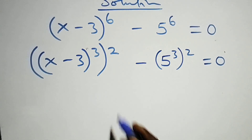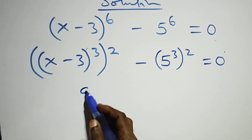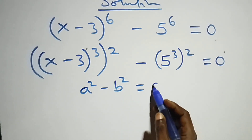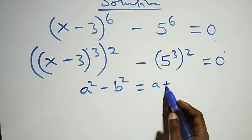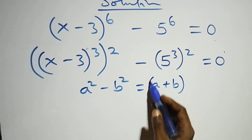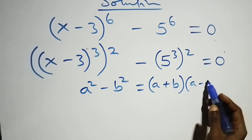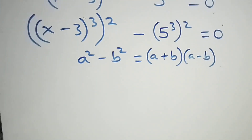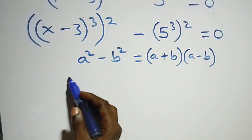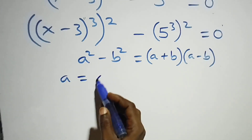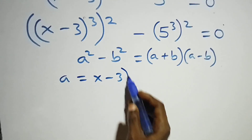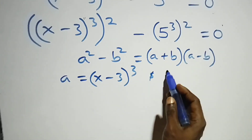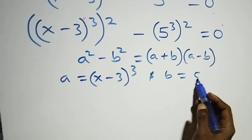And this follows from the difference of two squares: a squared minus b squared equals (a plus b) into (a minus b), where a stands as (x minus 3) times 4 raised to power 3, and b stands as 5 raised to power 3.